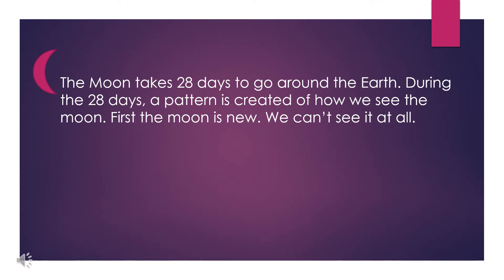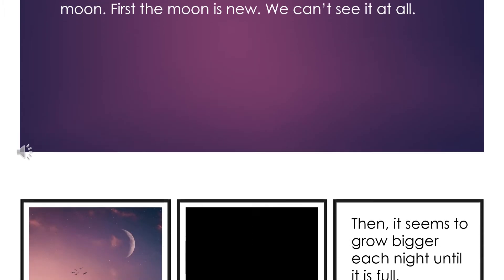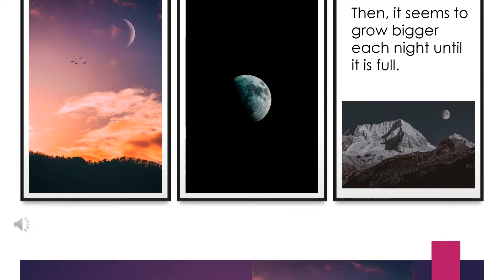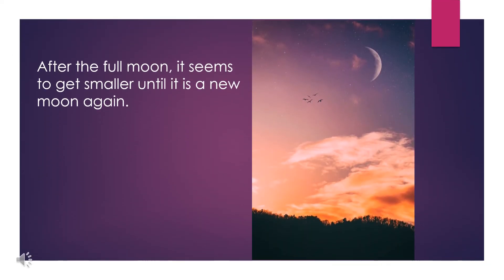The moon takes 28 days to go around the earth. During the 28 days, a pattern is created of how we see the moon. First, the moon is new — we can't see it at all. Then it seems to grow bigger each night until it is full. After the full moon, it seems to get smaller until it is a new moon again.